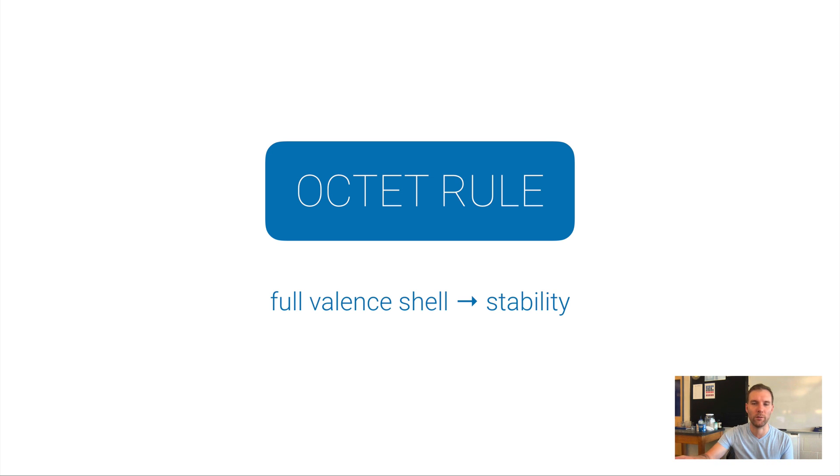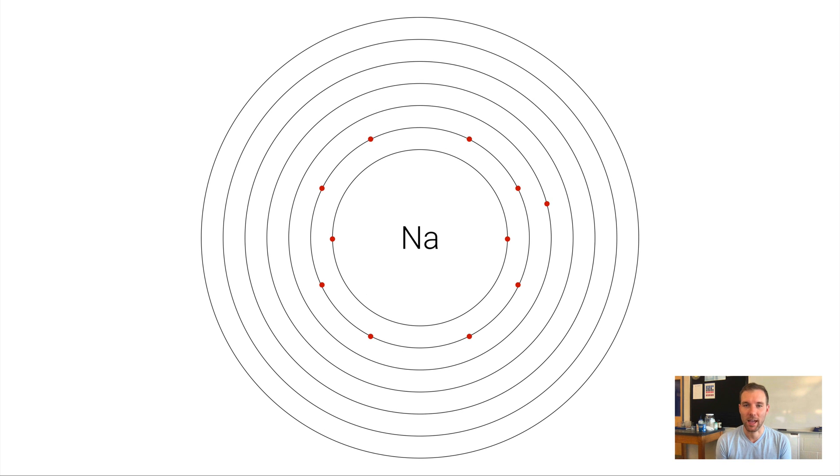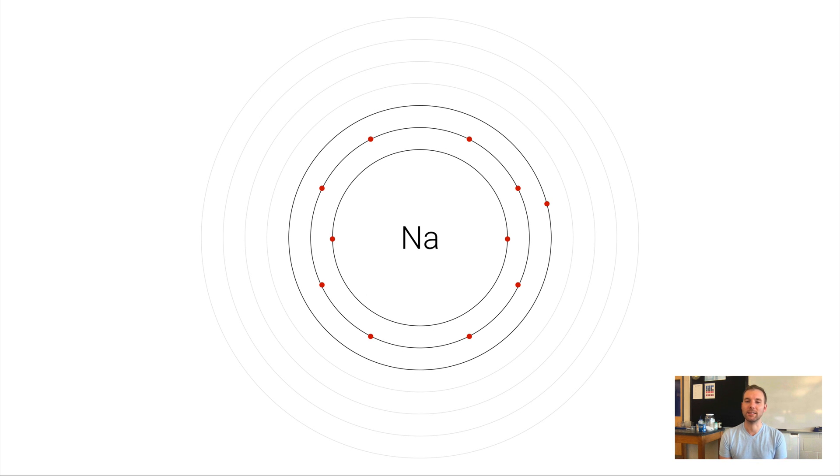Let's look at an example of sodium again. Sodium has 11 electrons but only one valence electron. It could potentially gain seven more electrons to have eight in that third shell, but it's actually much easier for sodium to just get rid of that one electron. If it does that, its new valence shell becomes the second shell, which is completely filled up with eight electrons.